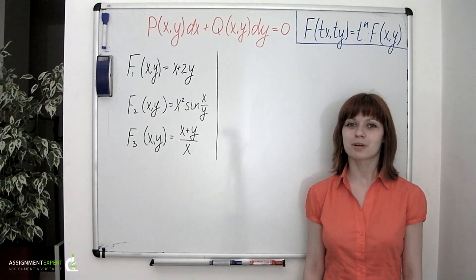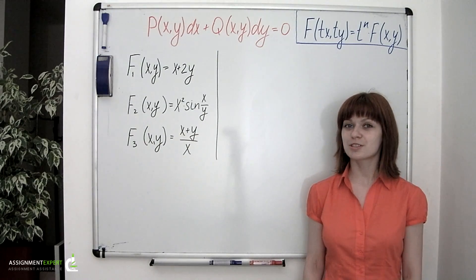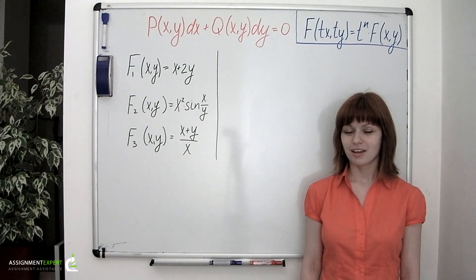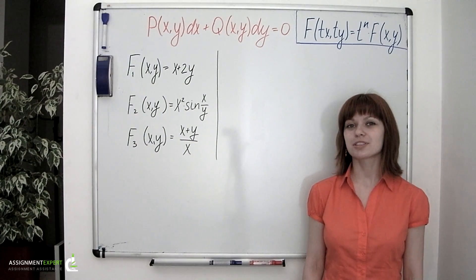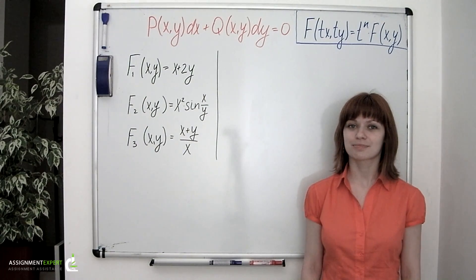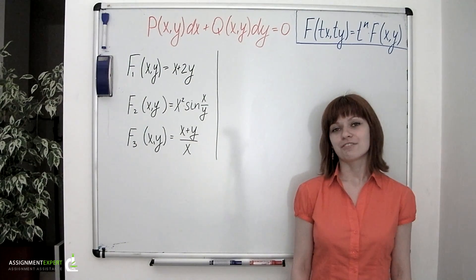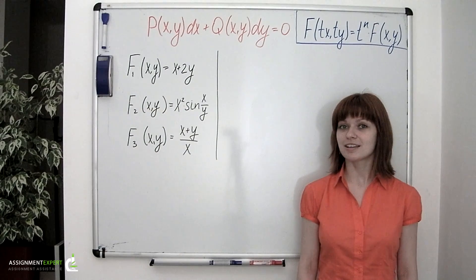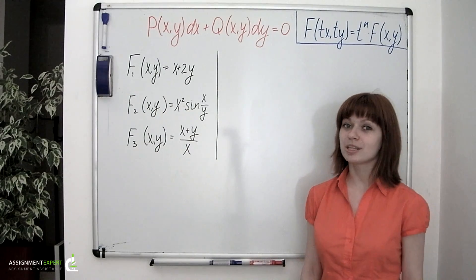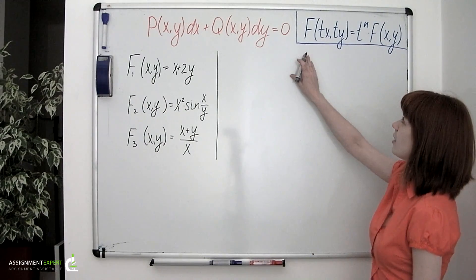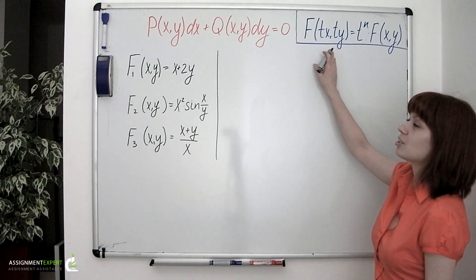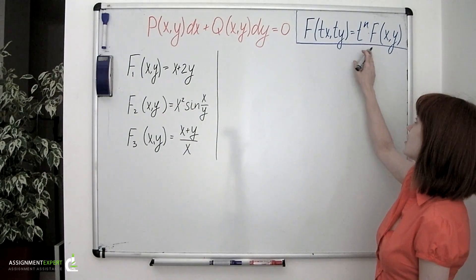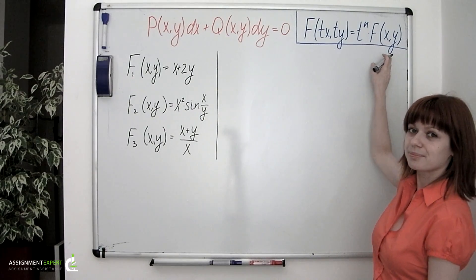In this video, we're going to talk about homogeneous first-order differential equations. We'll start with the definition of homogeneous functions. A function is called homogeneous of degree n if the following equality takes place: f(tx, ty) equals t to the n times f(x, y).